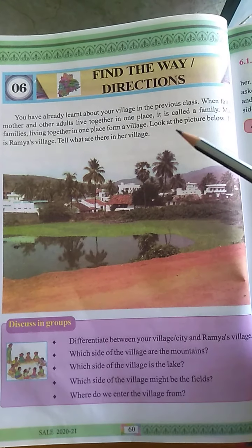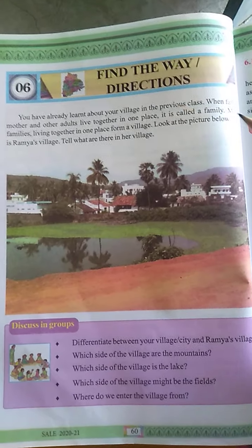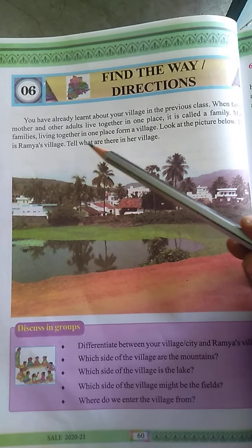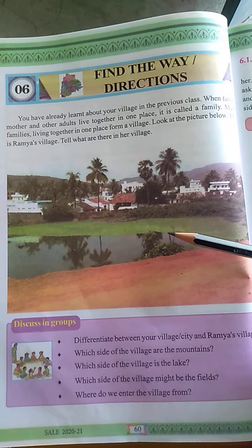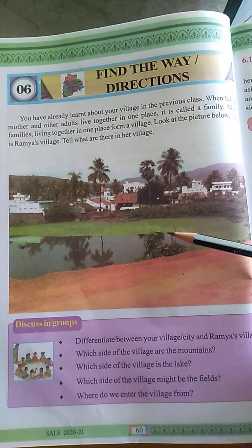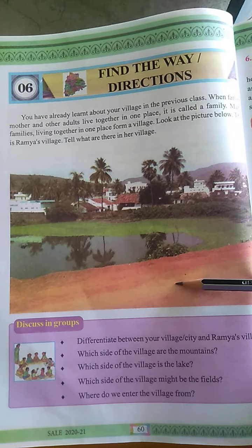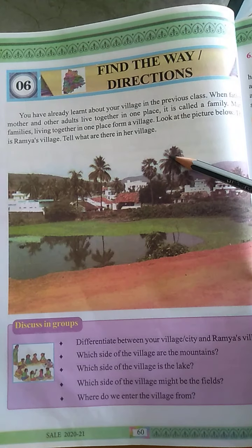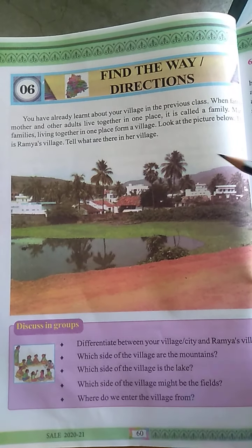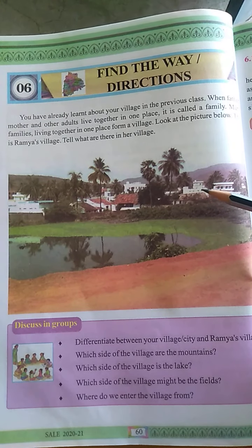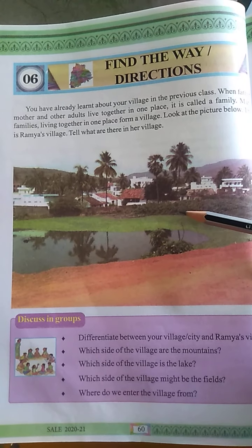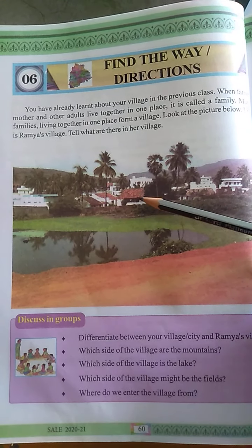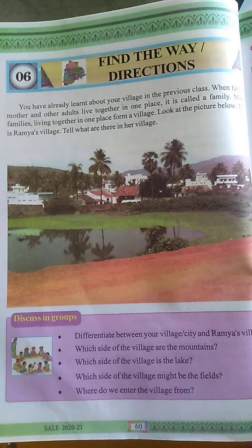Look at the picture below. This is Ramya's village. Tell what are there in her village. In Ramya's village, there is a small pond, one kaccha road, tall tall coconut trees, hills, and different types of houses and buildings. This is Ramya's village. Ramya is one of the girls who stays in this village with her family.